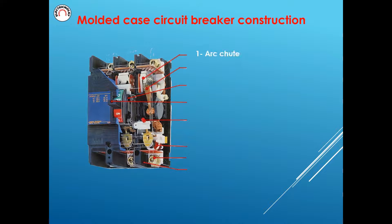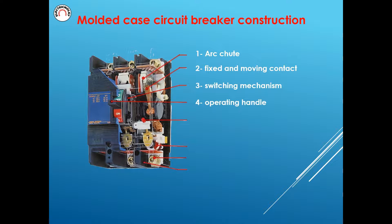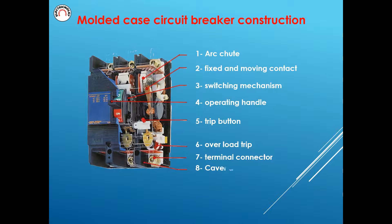Molded Case Circuit Breaker Construction. The MCCB consists of the following components: one arc chute; two fixed and moving contacts; three switching mechanism; four operating handle; five trip button; six overload trip; seven terminal connector; and the cover and base.